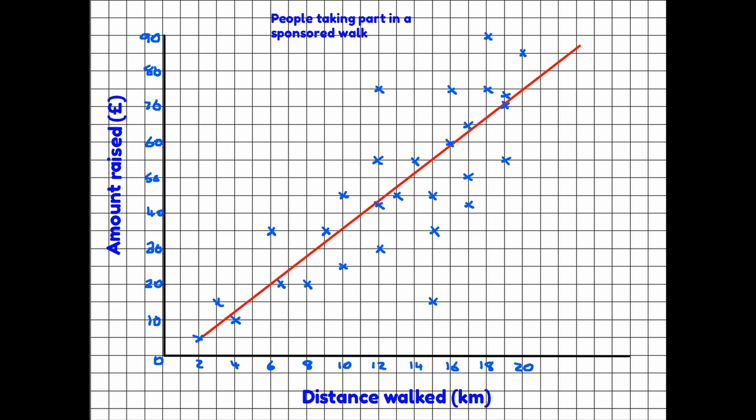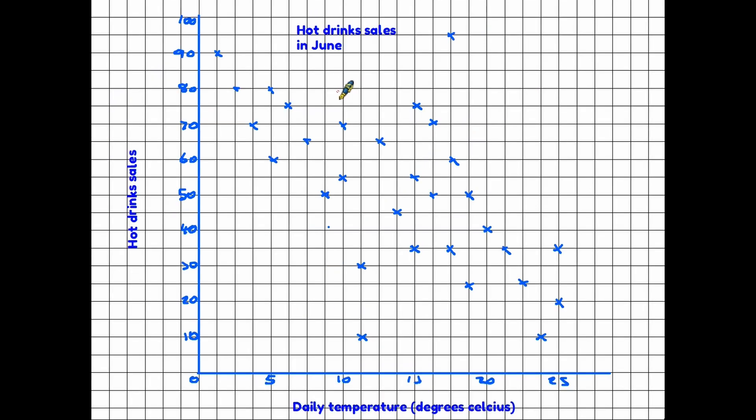Now that you have the line of best fit, a typical question would be to ask you about another walker. For example, if another person has walked 11 kilometers, estimate how much money they might have raised. If we do that, 11 kilometers on the bottom here, if we read up to the line of best fit there, this corresponds with 40 pounds. What we are saying here is an estimate - it cannot possibly be accurate, but an estimate that somebody who has walked 11 kilometers would raise around 40 pounds given the pattern that we have here.